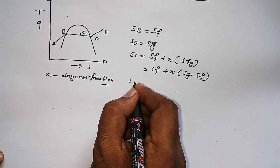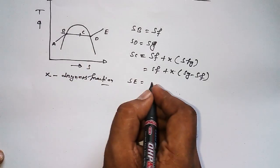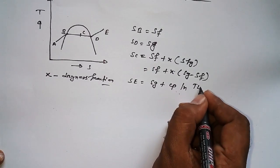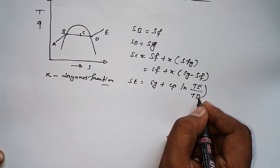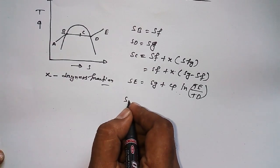Let's find out S_E. S_E is equal to S_g plus C_p times natural log of T_E by T_D.